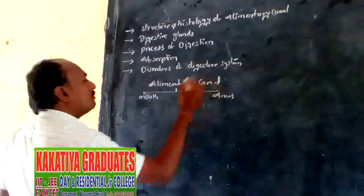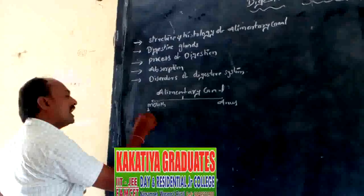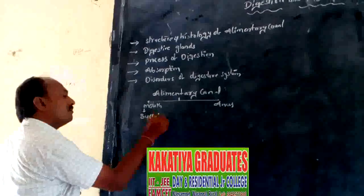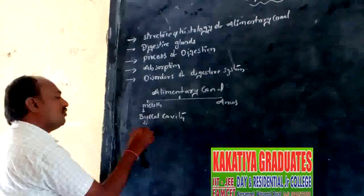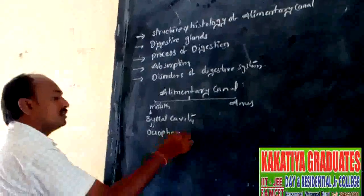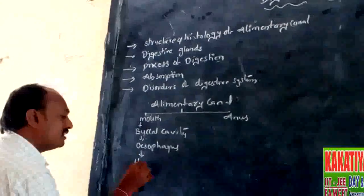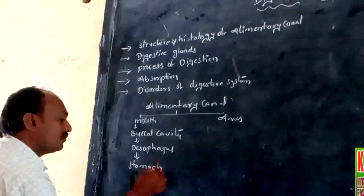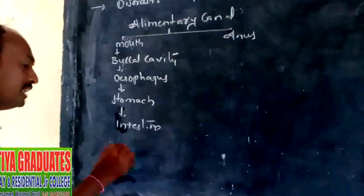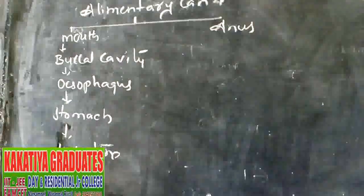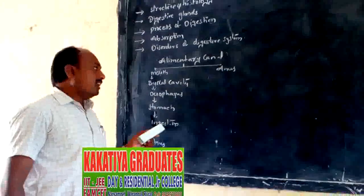Between the mouth to anus, the organs are: mouth, oral cavity (also called buccal cavity), esophagus, stomach, liver, and the intestine — which is divided into small and large intestine — finally ending with the anus.